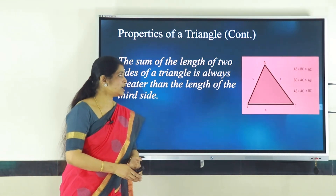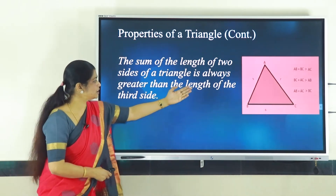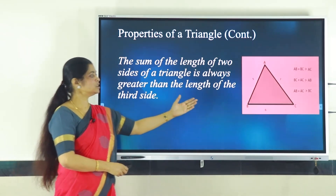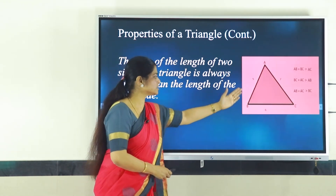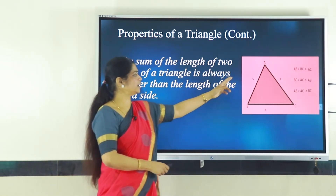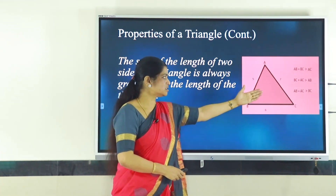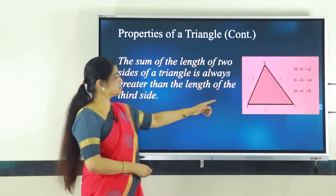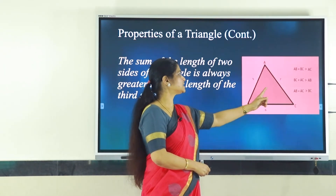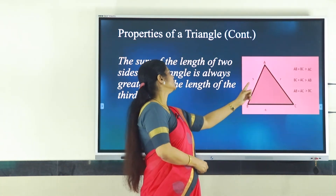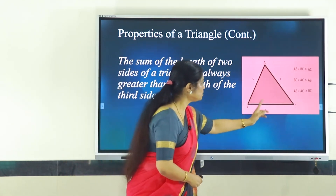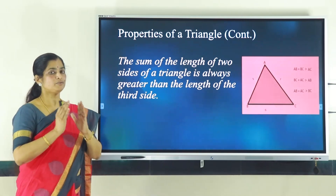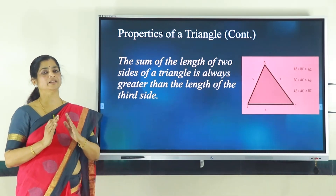The last property about the triangle is: the sum of the lengths of any two sides of a triangle is always greater than the length of the third side. This triangle has three sides: AB, BC and AC. When you add any two sides, the sum should be greater than the third side. Here, 5 + 6 = 11, which is greater than 7. Similarly, 6 + 7 = 13, which is greater than 5, and 7 + 5 = 12, which is greater than 6.